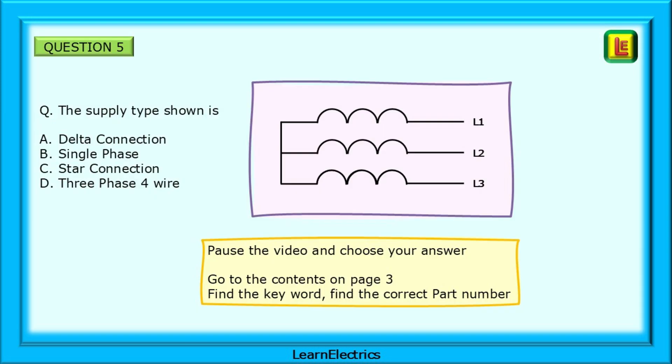Now for question 5. The supply type shown is what? Find this drawing and you have your answer. Find the key word in the question, go to page 3 and look for this word or something similar. This will direct you to the correct part in the book.